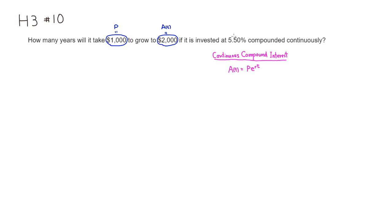It is invested at 5.5%. So this tells you that our r value would be, since it's percent, you have to divide by 100. So it's going to be 0.055.